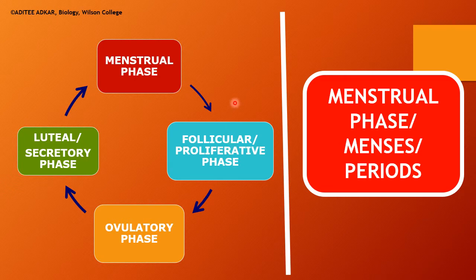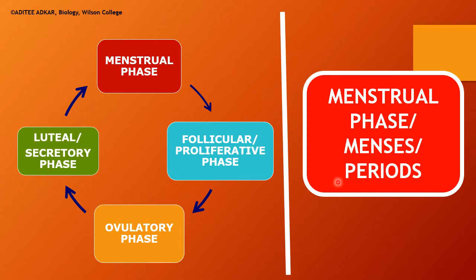Please understand the difference between the menstrual cycle and the menstrual phase. The menstrual phase is only one phase of the menstrual cycle, which comprises four phases. The menstrual phase is the bleeding phase commonly known as menses or periods. During this phase, some women may experience physical discomfort like cramps or abdominal pain, caused by uterine contractions.